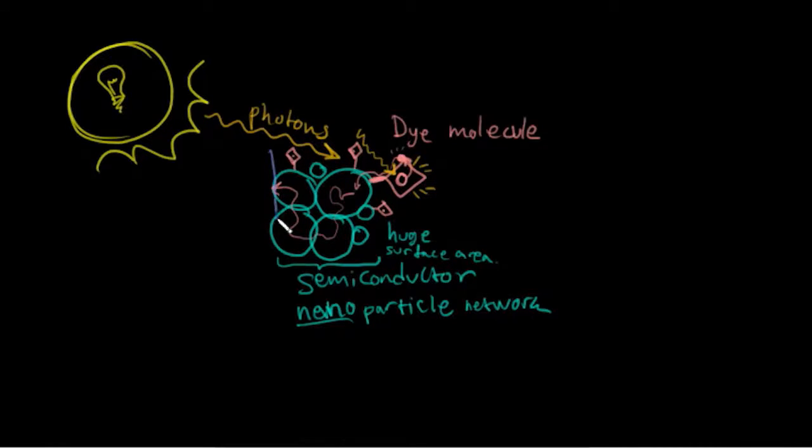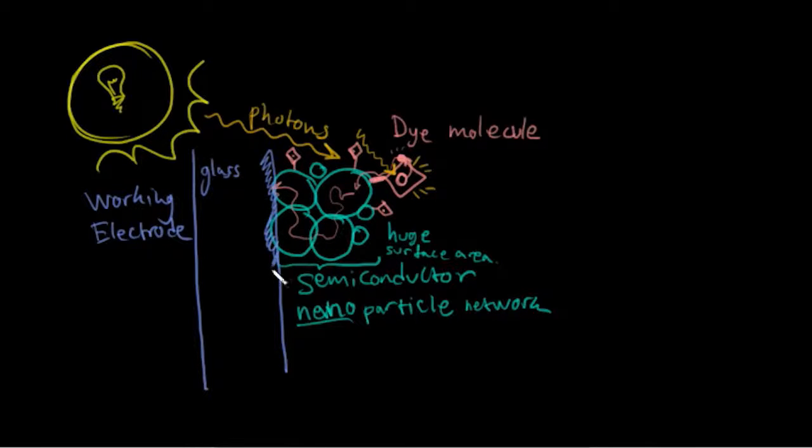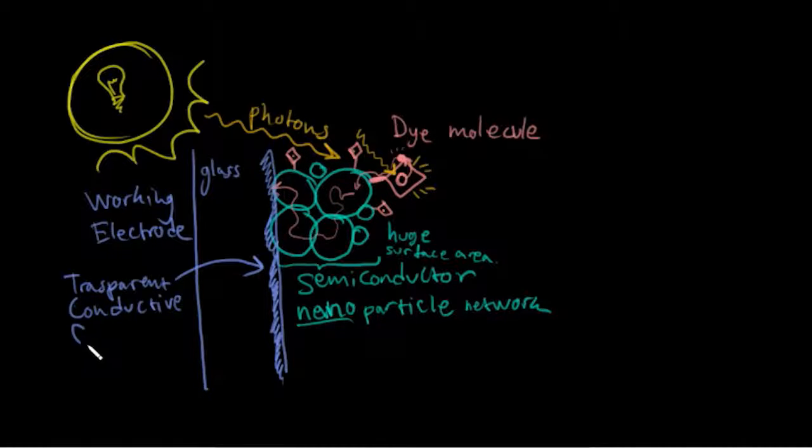The working electrode which I'm going to draw like this. The working electrode is usually just a piece of glass. But the glass is layered with a thin transparent conductive oxide. This is abbreviated TCO. And a common example is indium tin oxide, one of the common transparent conductive oxides.